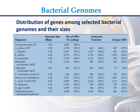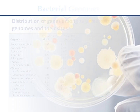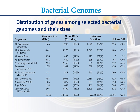H. pylori 26695: 2008 ORFs (91%), unknown function 744 (45%), unique ORFs 539 (33%). Methanobacterium thermoautotrophicum: genome size 1.75 Mb, 2008 ORFs (90%), unknown function 1010 (54%), unique ORFs 496 (27%). Methanococcus jannaschii: genome size 1.66 Mb, 1783 ORFs (87%), unknown function 1076 (62%), unique ORFs 525 (30%).